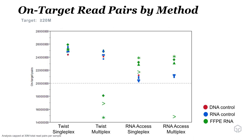Next, looking at on-target read pairs, we see a similar profile. In multiplex, poor quality FFPE samples are unable to meet the cutoff of greater than 20 million on-target read pairs for both TWIST and RNA Access. But when we use the exact same samples in singleplex capture, we're able to have all samples meet the criteria.